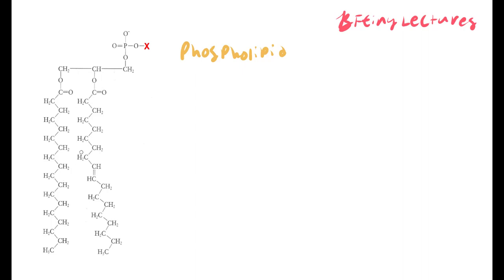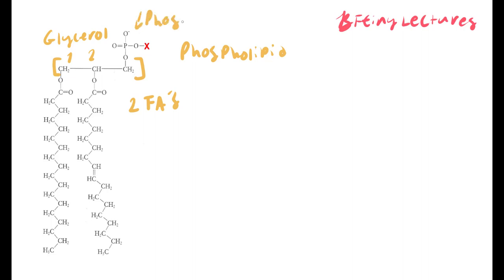A phospholipid is essentially two fatty acids connected to a glycerol. The glycerol backbone is this three-carbon structure. Connected to positions one and two are two fatty acids. On the third position — the unoccupied carbon — you will have a phosphate group, which is sometimes called the phosphate head. Because we have two fatty acids, phospholipids are also called diglycerides.